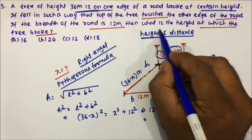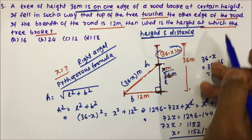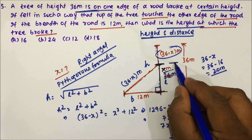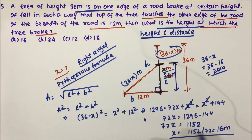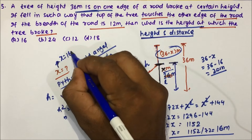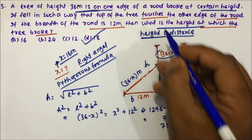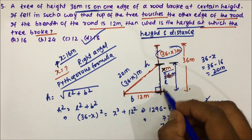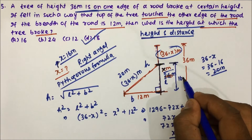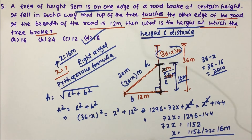The question asks for the height at which the tree broke, which is x = 16 meters. Option D is the correct answer. The broken tree height is 20 meters and the height at which the tree broke is 16 meters. I hope you understood this height and distance question. Thanks for watching — if you liked the video, please put a comment in the comment box.